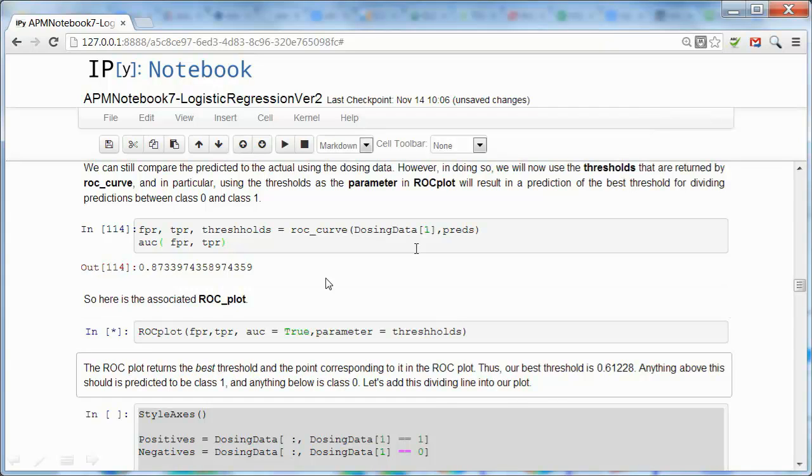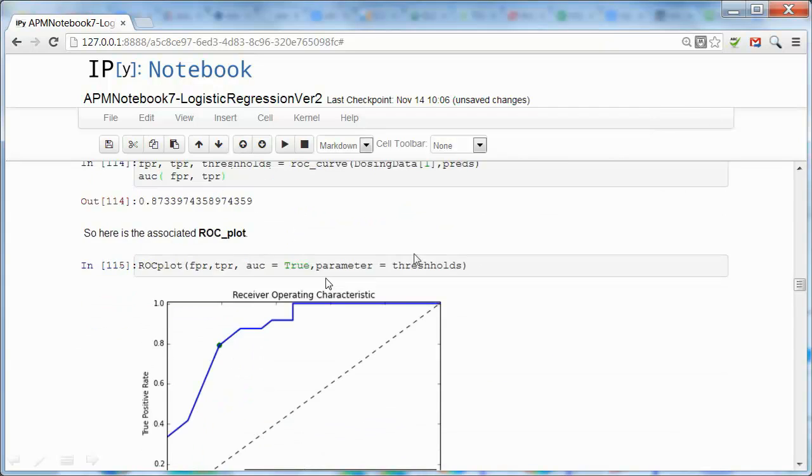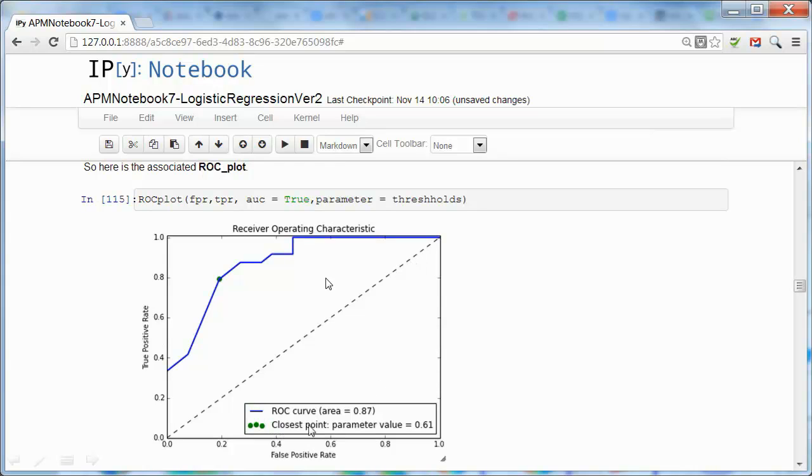And we can still do the plot. There's our receiver operating characteristic. And notice we've got this green point. That's the closest to the ideal, 0, 1, in the upper left corner.